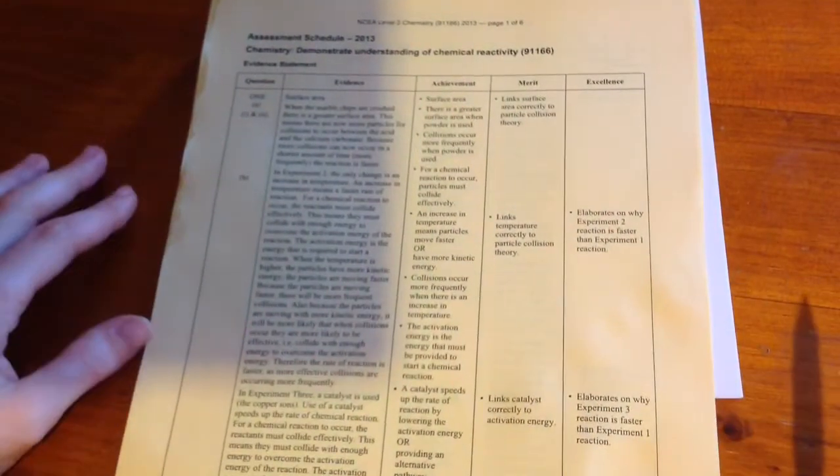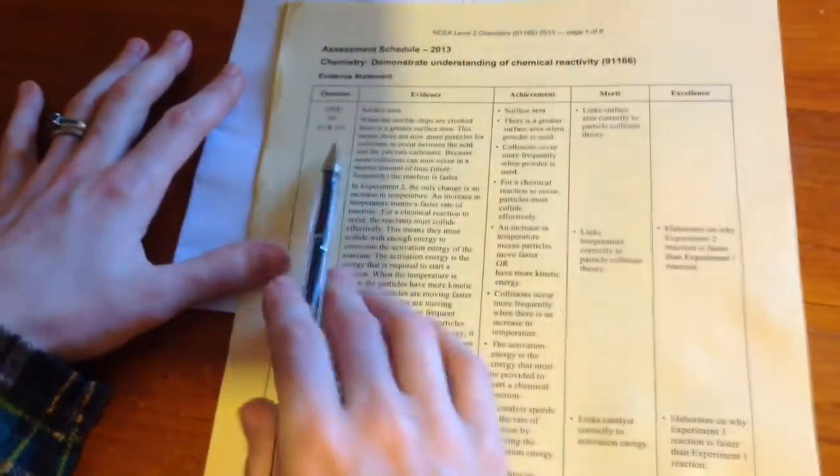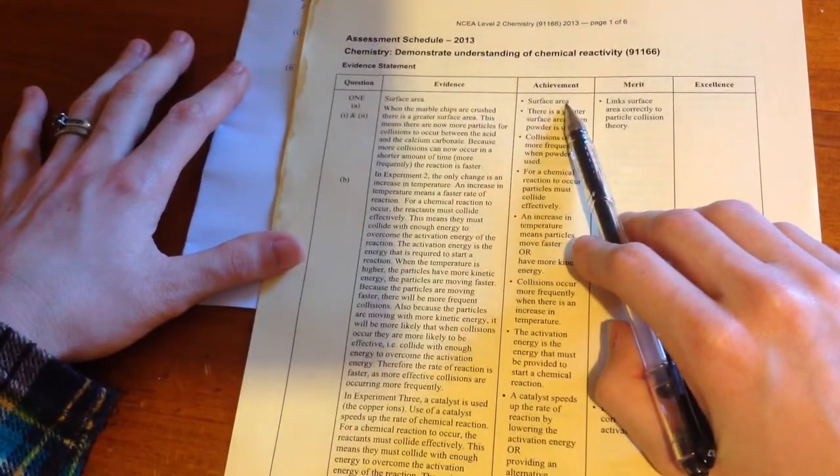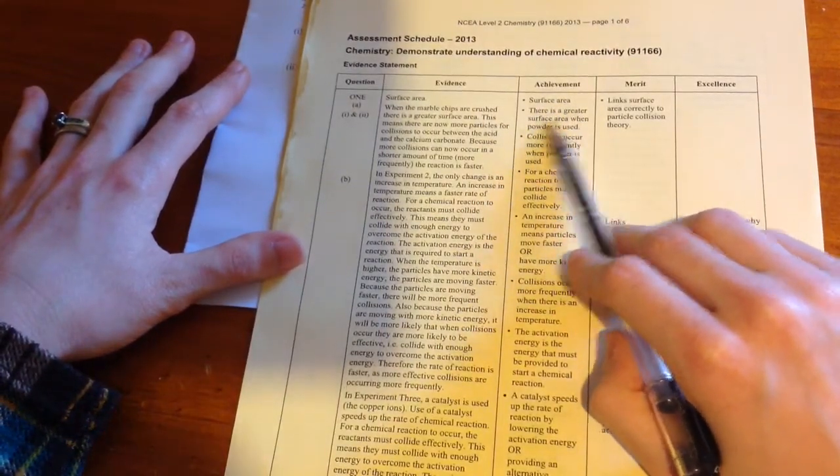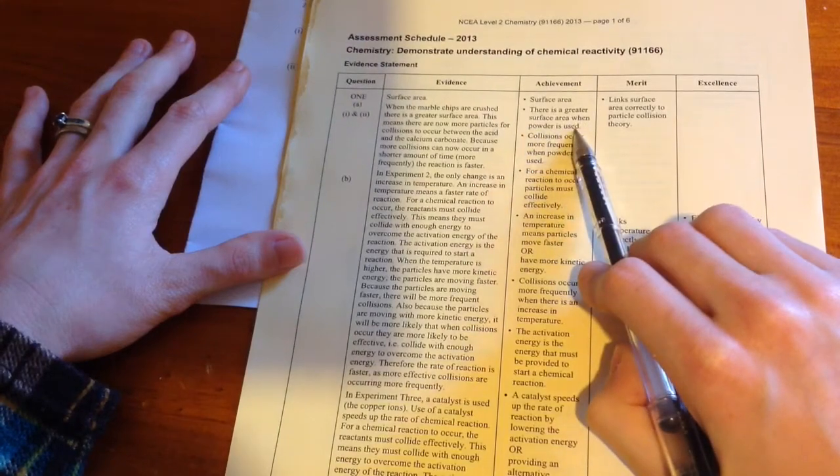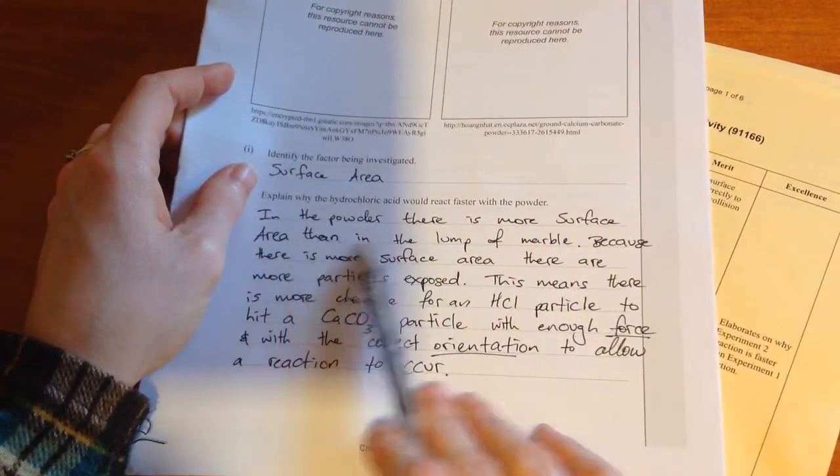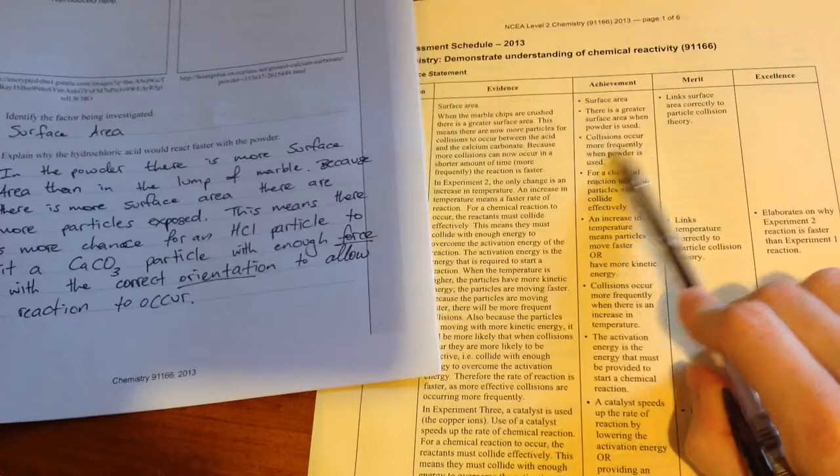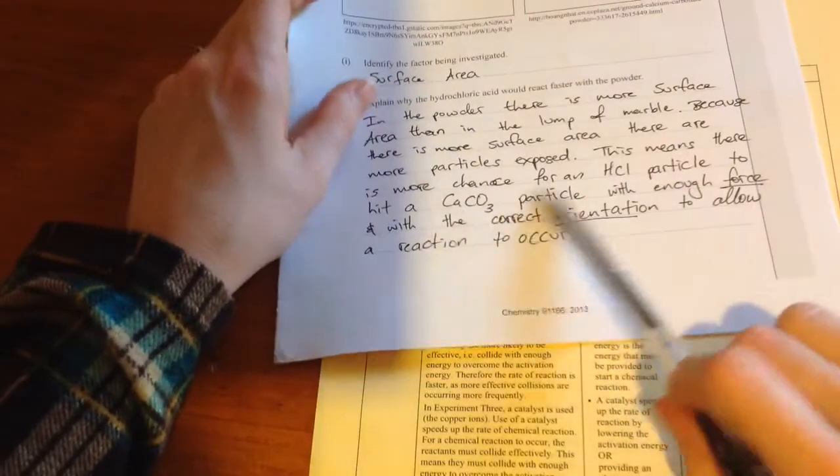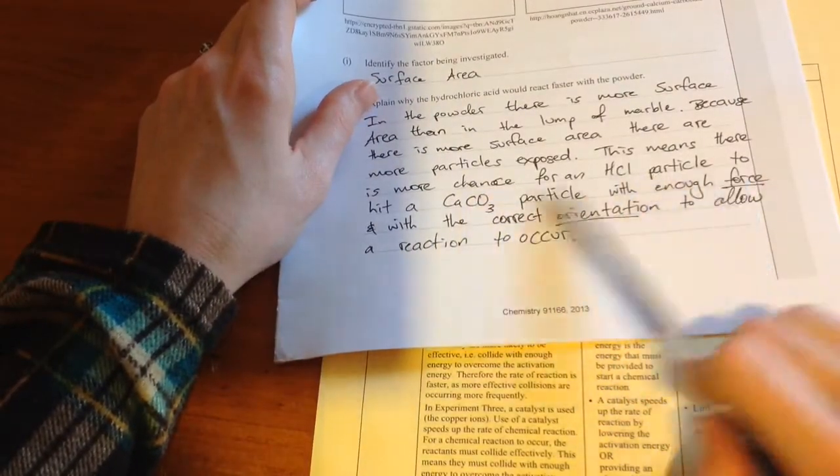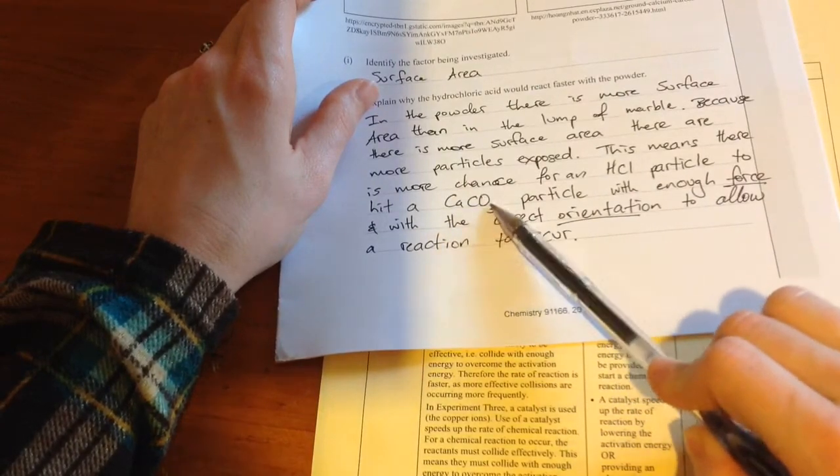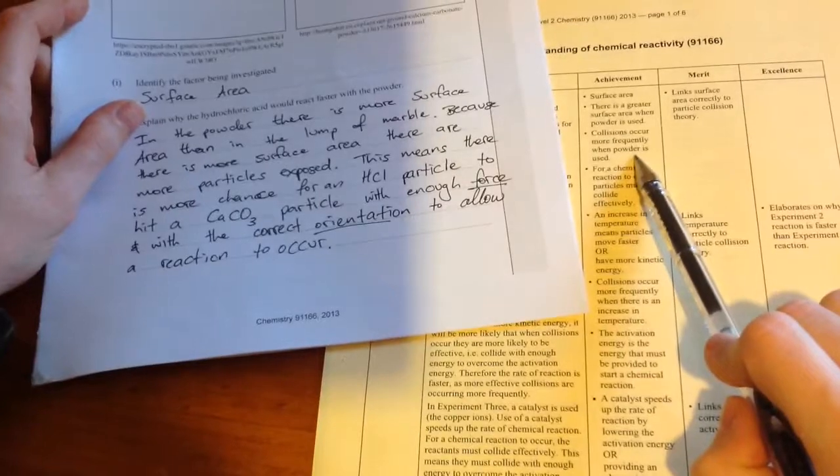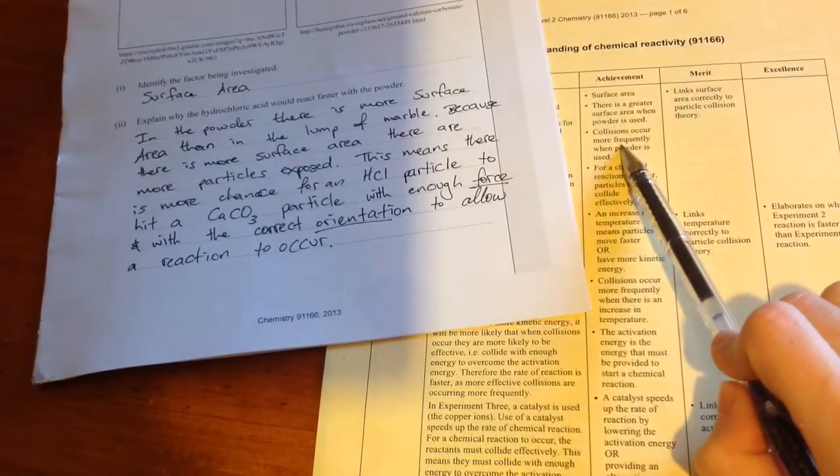Here is my assessment schedule. Now for this question, question 1i and i2, it says here to get achieved I need surface area, I need a greater chance. There is a greater surface area when powder is used, so I need to link those two. So here I've got in the powder there is more surface area than in the lump. I've done that. Collisions occur more frequently when powder is used. There is more chance for HCl particle to hit a CaCO3 particle. So there is more chance for those to hit, I take that, that they will happen more frequently.